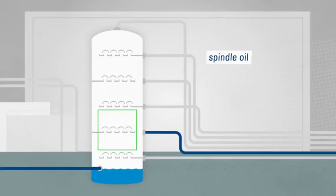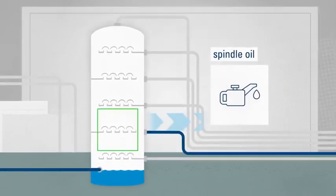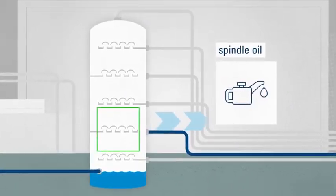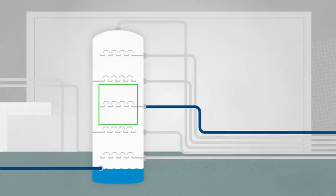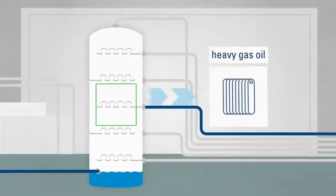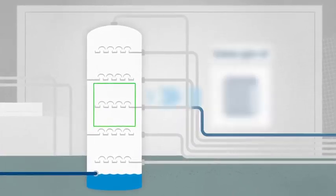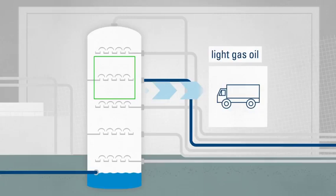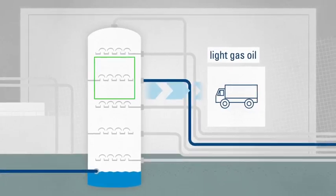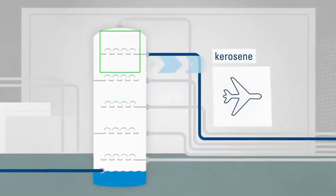In addition, spindle oil also settles in the first column, a key component of other refinery products. The heavy gas oil is taken from one level higher. This is used to make heating oil. The next thing produced is the basis for diesel. One level up, and you get kerosene.